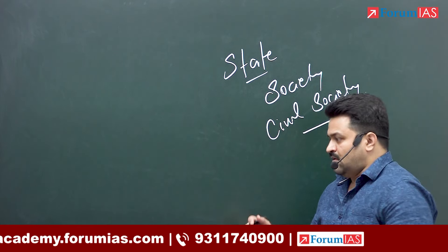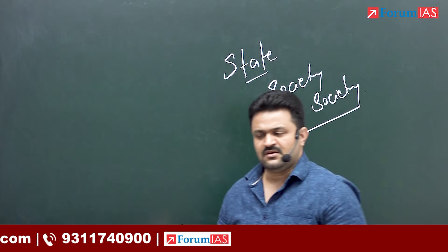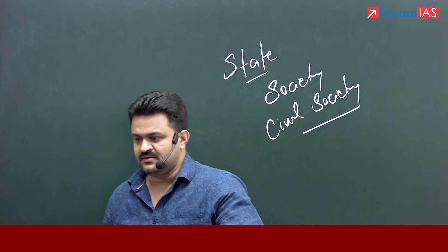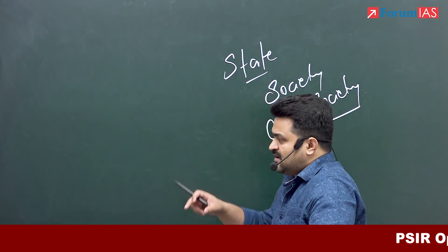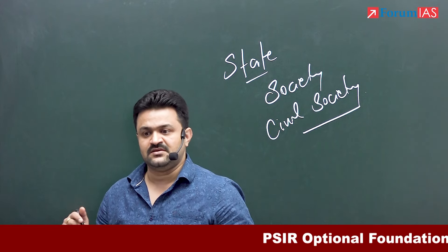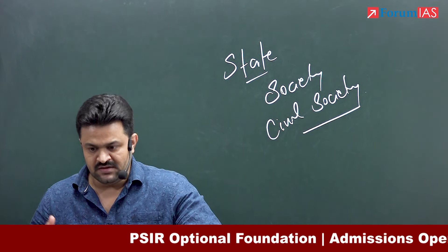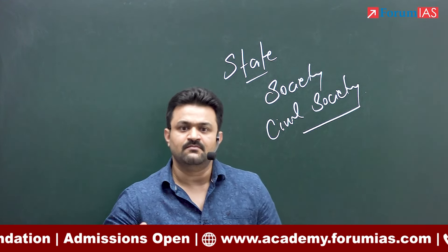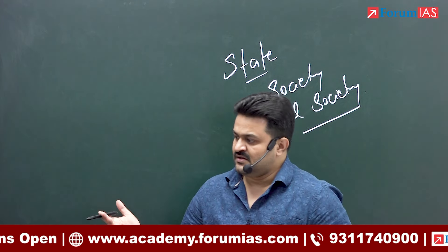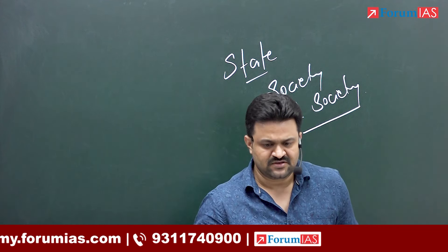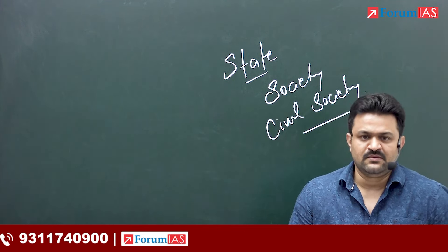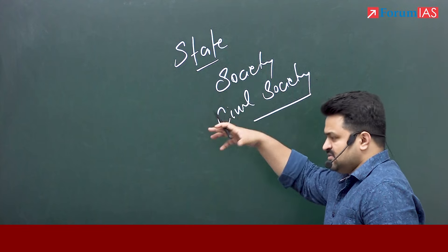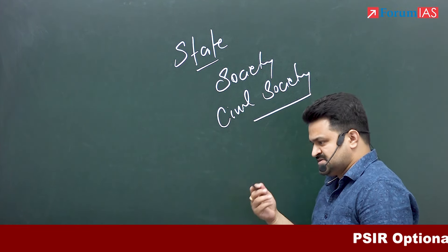Although state is quite central to many important discourses in political science, it is still a contested concept. This contestation is not superficial — it is quite real, and it reached a point where scholars like David Easton suggested completely replacing the term 'state' with a term like 'system.' But that is another debate, something we will discuss in both paper 1 and paper 2 theory parts.